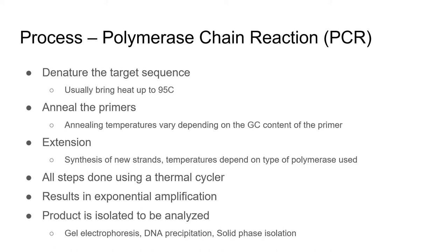For PCR, there are three basic steps: you denature the target sequence, you anneal the primers to that target sequence, and then you synthesize a new strand of DNA. These steps take place in a thermocycler, which allows the temperature to change as needed for each step. Since each parameter contains multiple variables to play with, the thermocycler can be programmed to optimize this process. After enough cycles, the product is isolated, generally by electrophoresis, though other methods also exist.